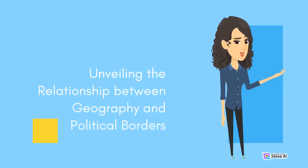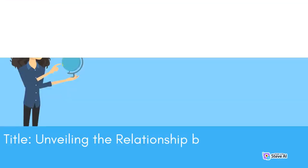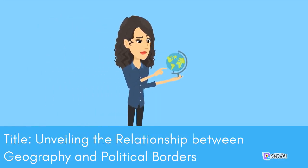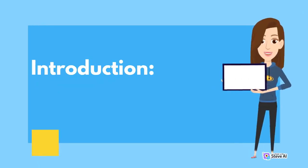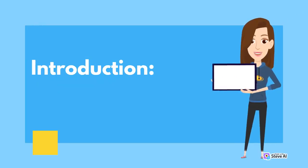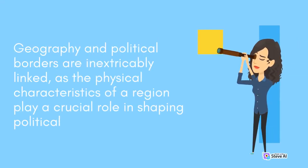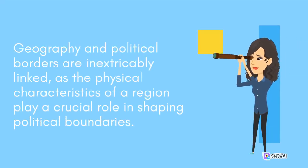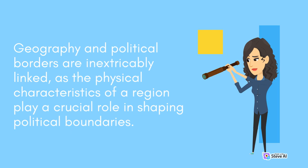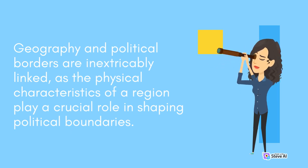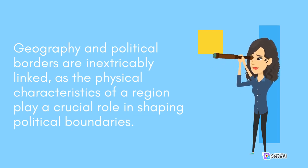Unveiling the Relationship Between Geography and Political Borders. Geography and political borders are inextricably linked, as the physical characteristics of a region play a crucial role in shaping political boundaries.